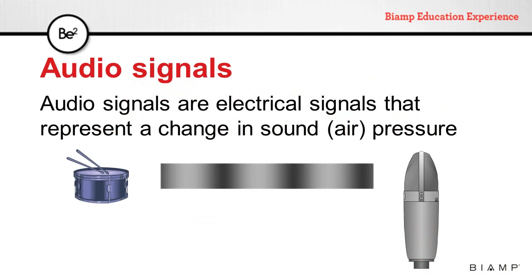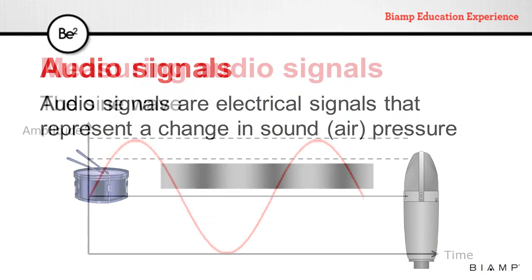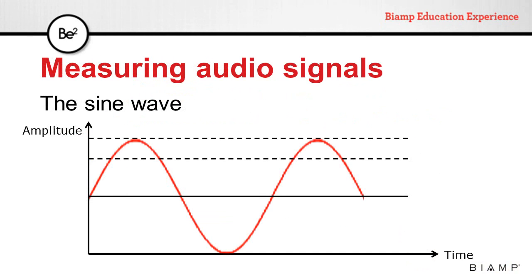Audio signals are electrical signals that represent a change in sound or air pressure. To measure level, we use the signal's amplitude. If we consider a pure tone, which is represented as a sine wave, we can measure level in three different ways.